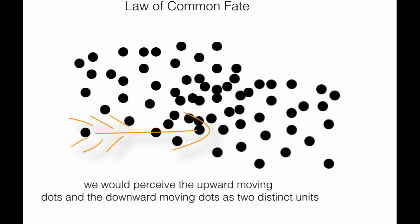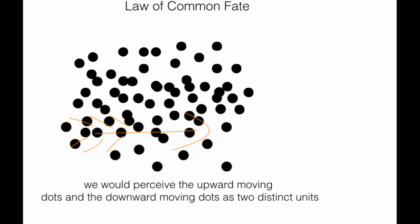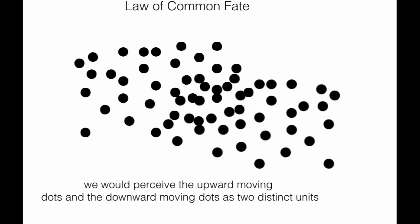Now what you will think is those circles which move to the right hand side are actually a group. But in reality, it can be or it can be not. The law of common fate tells us that if an object or multiple objects are moving in a single line or a single path, then we perceive that they are in a group.